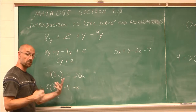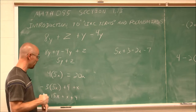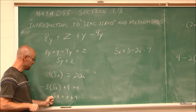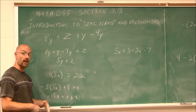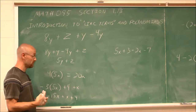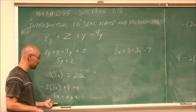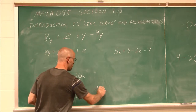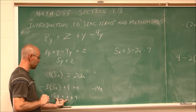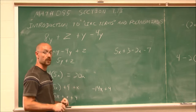Now I can rearrange using the associative property. I have negative 15x plus x — these are like terms because they both have x to the same power. Negative 15 plus 1: different signs, difference of 15 and 1 is 14, and the larger value is negative. So I get negative 14x plus 4, which is not a like term, so that's as far as I can go.